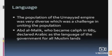The population of the Umayyad Empire was very diverse, which was a challenge in uniting the population. Abd al-Malik, who became the caliph in 685, declared Arabic as the language of the government for all Muslim lands.